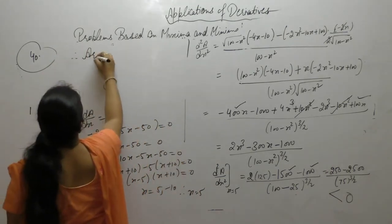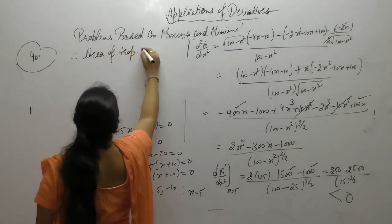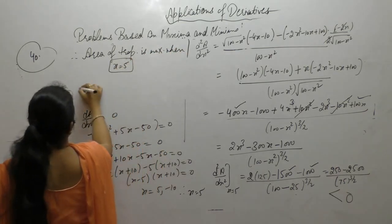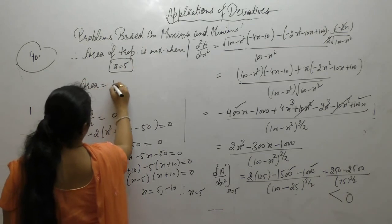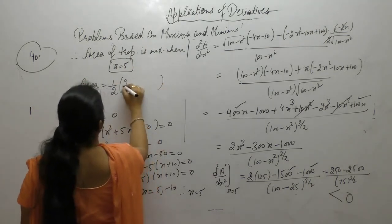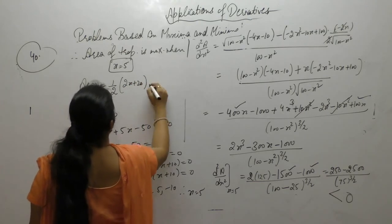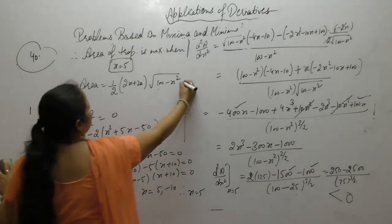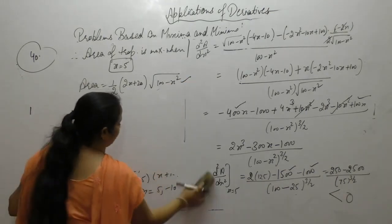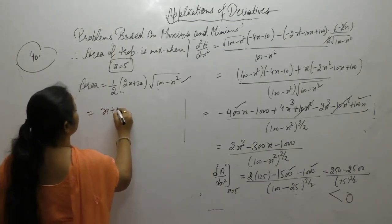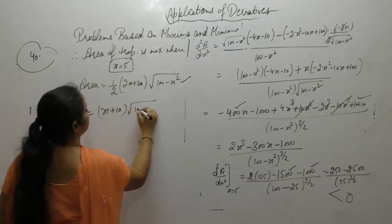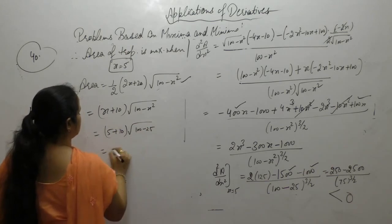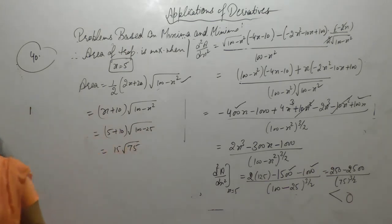Therefore area of trapezium is maximum when x equals 5. Maximum area equals ½ times (2x plus 20) times sqrt(100 minus x²). Put x equals 5: ½ times (10 plus 20) times sqrt(100 minus 25) equals 15 times sqrt(75).